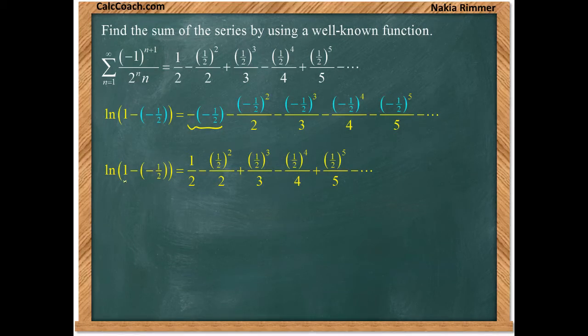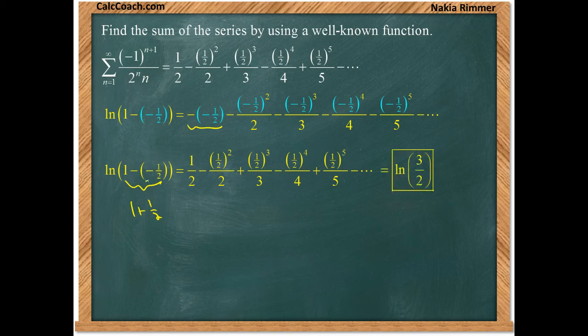So, on the left-hand side then, we can replace the x with negative one half. One minus a negative one half is one plus a half, and that's more commonly known as three halves. So what we're looking at is the natural log of three halves.